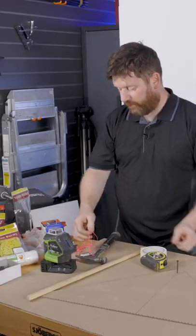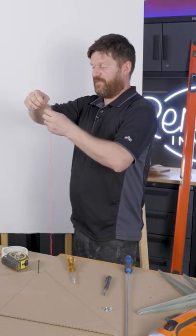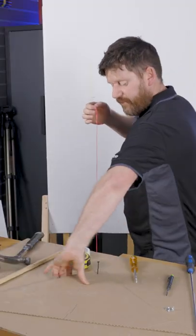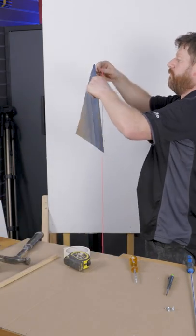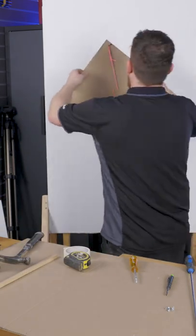place in there and a plumb bob - a piece of string with a weight on the bottom. Tie a knot in the end, it'll go round the string, and then you offer that up to your wall. Then it's just a